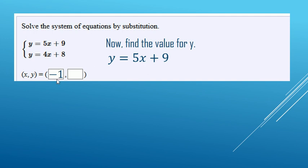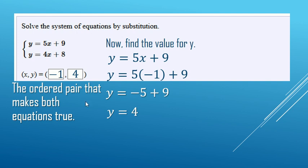We're going to replace the x with what it's equal to. Now we do order of operations. Multiply first, negative 5 plus 9, then do addition. y equals 4. So negative 1 comma 4 is the ordered pair that makes both equations true.